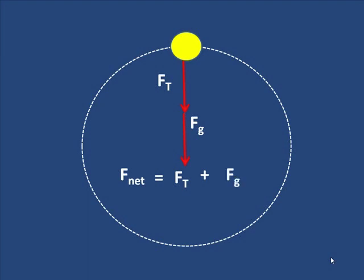Now we know that the net inward force that causes something to go into a circle is mv²/R. So we set mv²/R equal to F_T plus F_g.